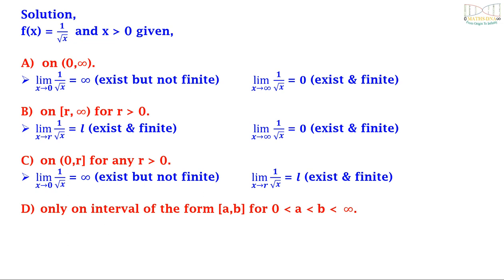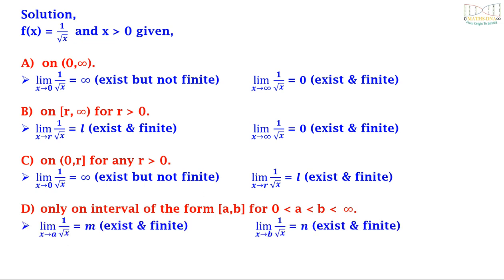Option D says only on intervals of the form closed [a, b] for 0 < a < b < ∞. Here the limit as x tends to a of 1/√x exists and is finite, and the limit as x tends to b of 1/√x also exists and is finite. However, this option is not the most complete answer, because in option B we find that it is not necessary for the right side to be closed — it can be infinity too. Therefore the correct answer is option B.